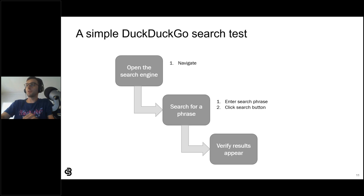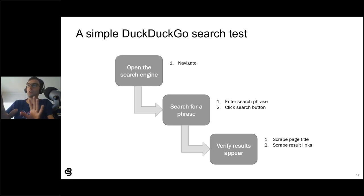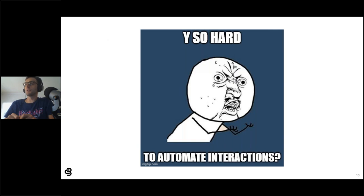Searching for a phrase requires entering keystrokes and clicking the search button. Verifying results requires scraping the page title and results links from the new page. Interactions are everywhere. Unfortunately, our industry struggles to handle automated web UI interactions well.